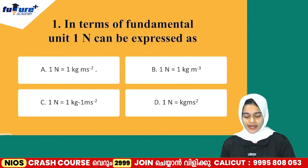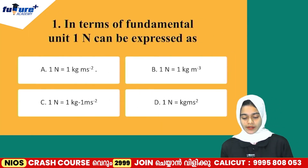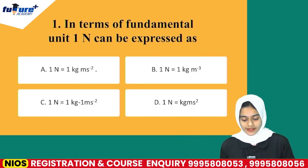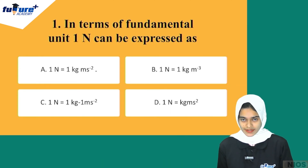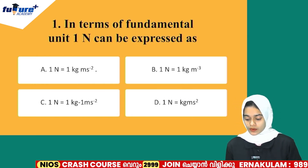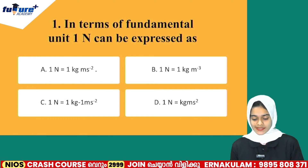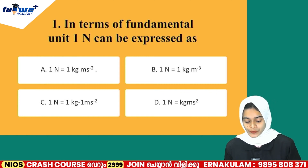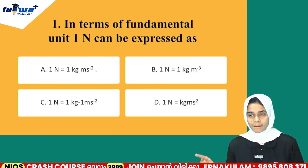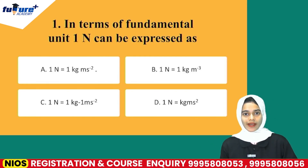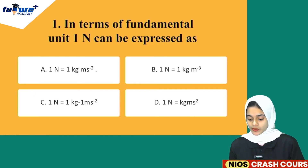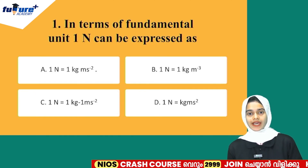First question: in terms of fundamental units, 1N can be expressed as — Option A: 1N = 1 kg·m/s². Option B: 1N = 1 kg/m³. Option C: 1N = kg⁻¹·m/s², that is meter divided by kilogram·second squared. Option D: 1N = kg·m·s².